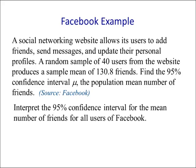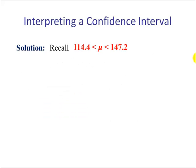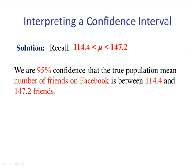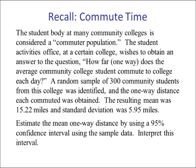Example 2 — Facebook: we want to interpret the 95% confidence interval for the mean number of friends for all users of Facebook. We are 95% confident that the true population mean number of friends on Facebook is between 114.4 and 147.2 friends.